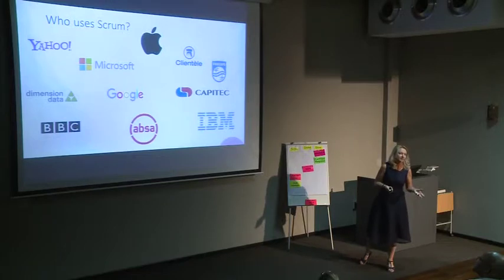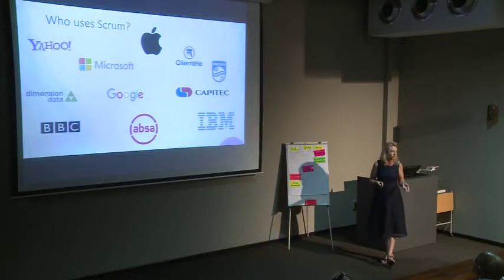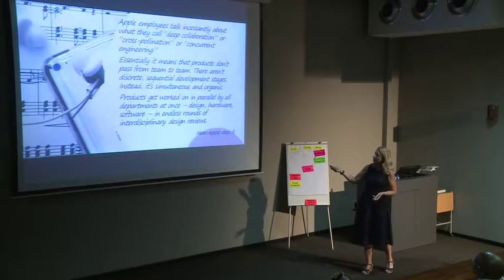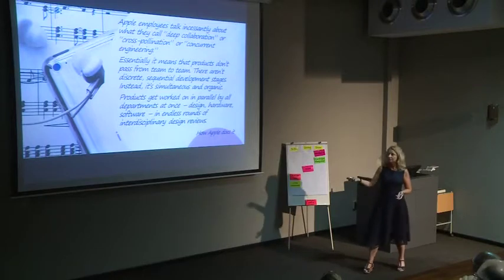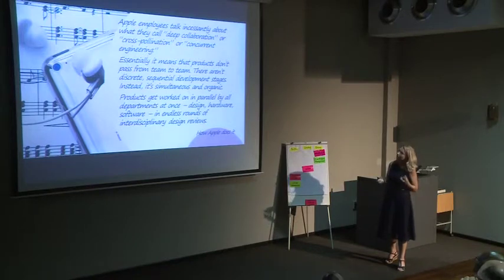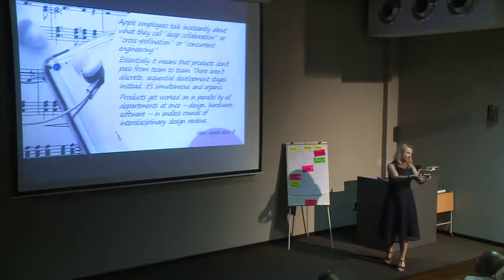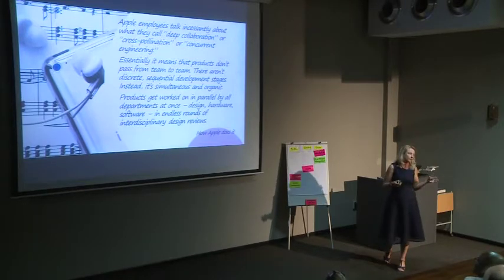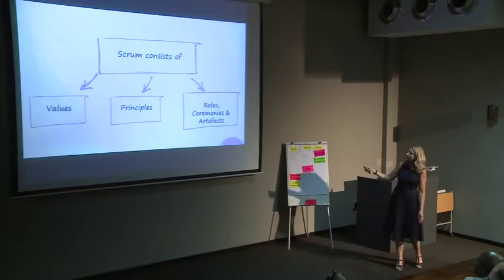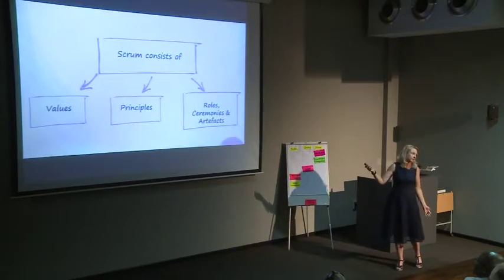About 70% of Agile companies use the Scrum methodology. Apple is a good example — they talk about deep collaboration, cross-pollination, and concurrent engineering, where the team works on things together. They don't do something and hand it over to the next team; the team that produces the product — whether the iPod or anything else — does it all in one product team. Scrum consists of values, principles, roles, ceremonies, and artifacts — and this is where I'll start talking about stand-ups and the other things.